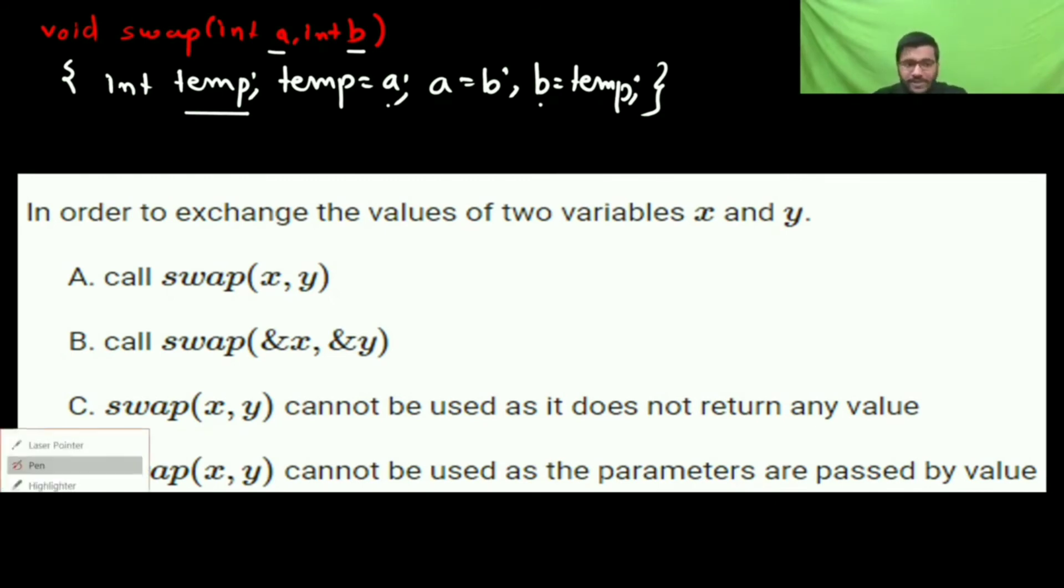Option D says swap(X, Y) cannot be used because the parameters are passed by value. Since the parameters are passed by value, the swap will not work.